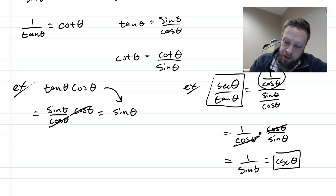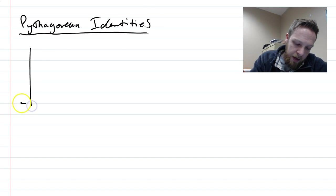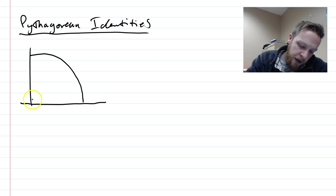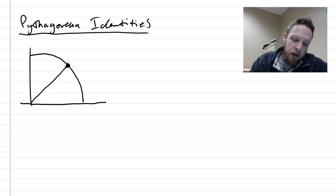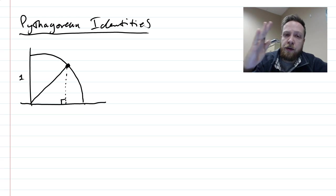So along with these basic identities, we have something called the Pythagorean identities. You have this corner of the unit circle. We've talked about how we have a right triangle. If you pick any point along that circle, you have a right triangle by dropping an altitude down like that.